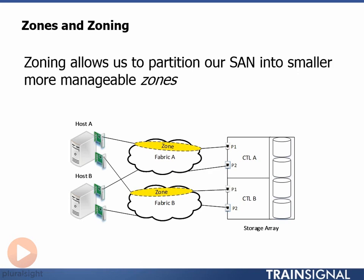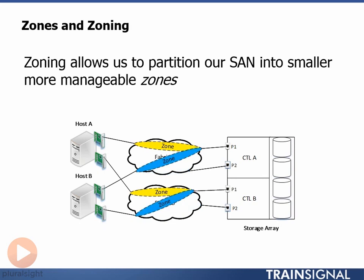In order for Host B to communicate with our storage array, we need to create zones that will allow that access. We've created zones for Host B to communicate with port P2 on Controller A over Fabric A, and port P2 on Controller B over Fabric B. But importantly, Host B can't communicate with anything else on the fabric — it can only communicate with the devices that exist in the same zones that it does. It's entirely possible, and in fact extremely common, for devices to exist in multiple zones, especially storage ports. We could have zoned Host A and Host B in with port P1 on both controllers, which is perfectly acceptable and extremely common configuration.